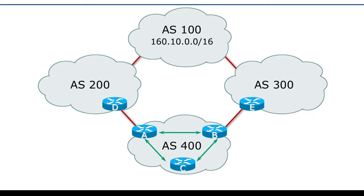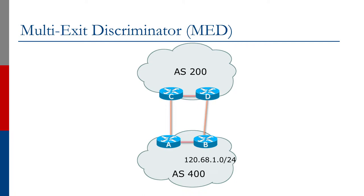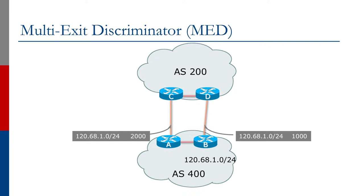Using the previous example with local preference, as a human being we can look at this and maybe we do router C to router A one day, router D to router B another day, just depending on our preference. But we can't tell the router to just pick something whatever works best. What we do is set a multi-exit discriminator on the announcement on each link from AS400 to AS200.